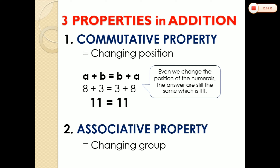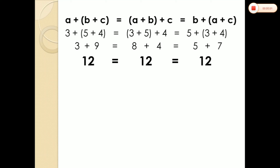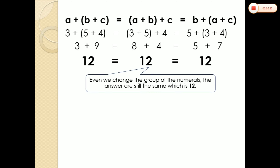The next property is what we call associative property. Associative property means changing group. So if commutative property means changing position, associative property means changing group. It looks like this: A plus (B plus C). Even if you change their grouping, you will get the same answer. It doesn't matter — even if you change the group of the numerals or numbers, the answer is still the same, which is 12.